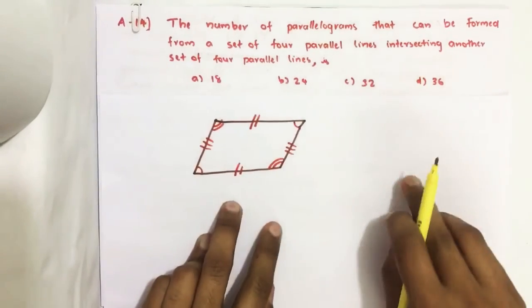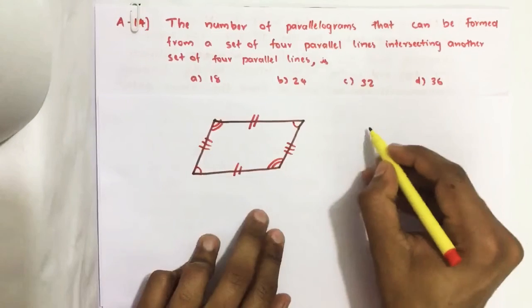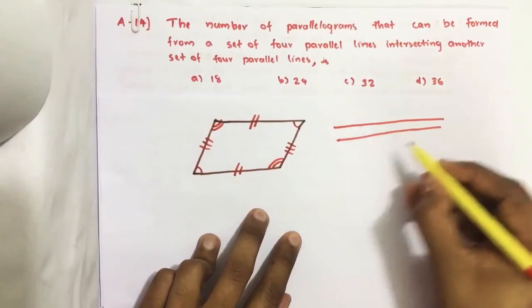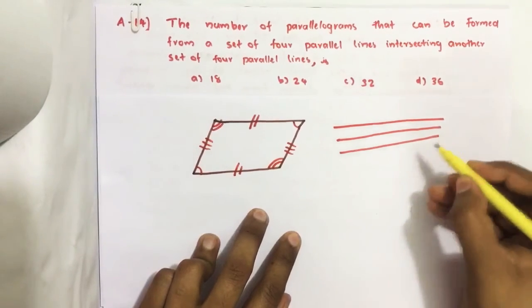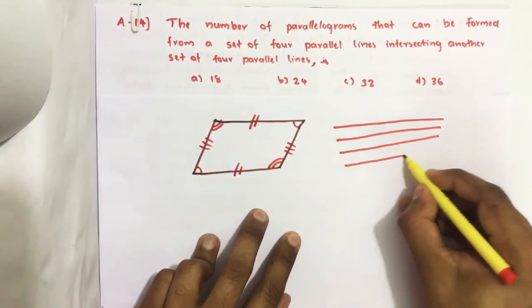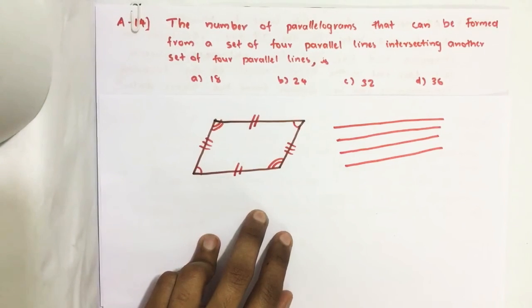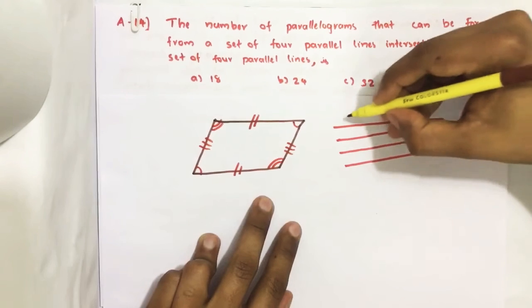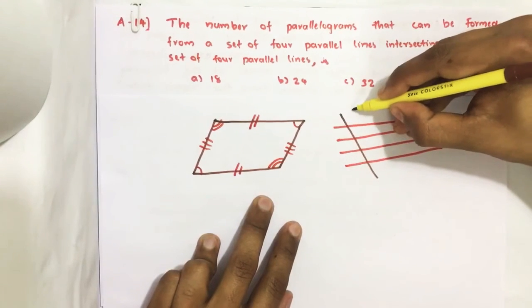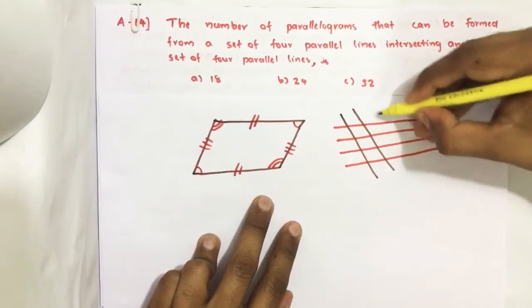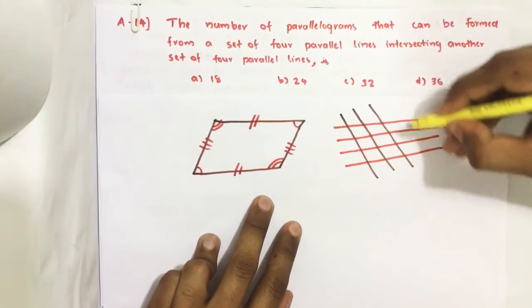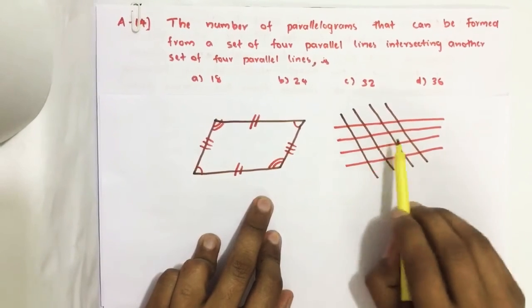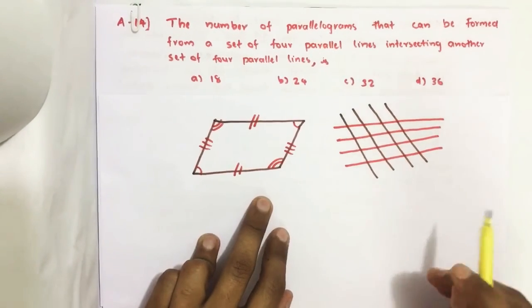So here in this question, they are asking if there are four parallel lines and another set of four parallel lines. How many parallelograms are there in this set? That is the question.